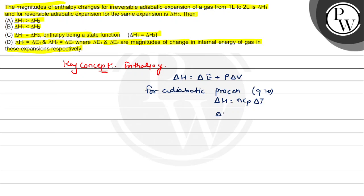ΔH is equal to ΔT. Here are two work done - magnitude of enthalpy change from one liter to two liter work done for a reversible process.